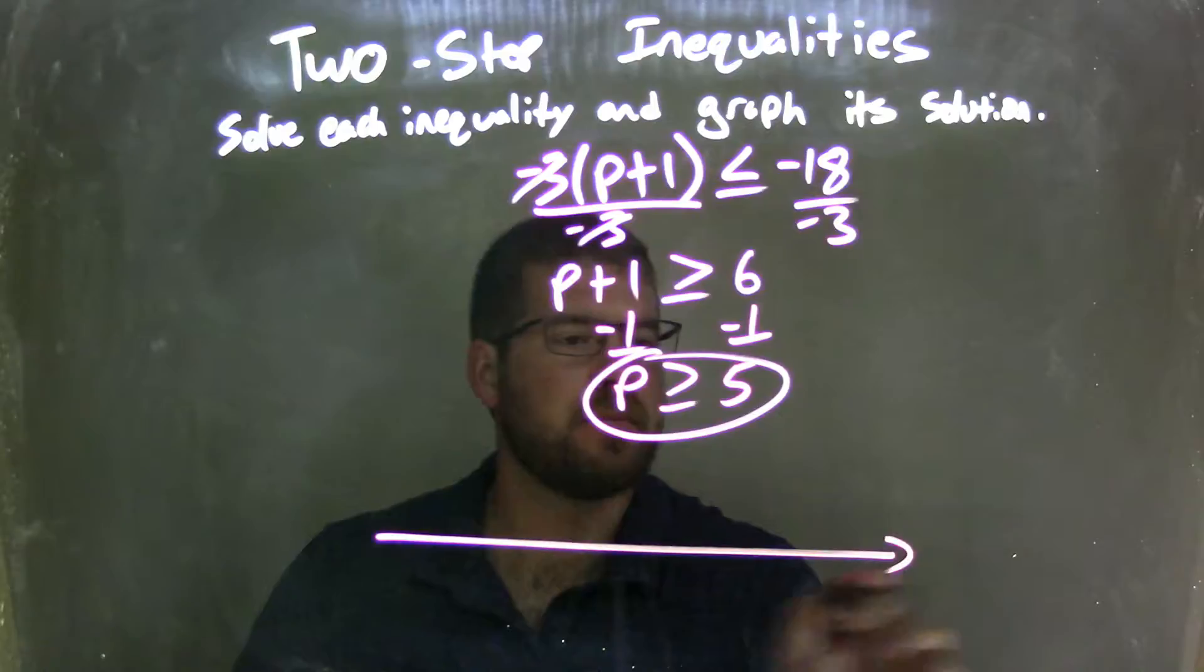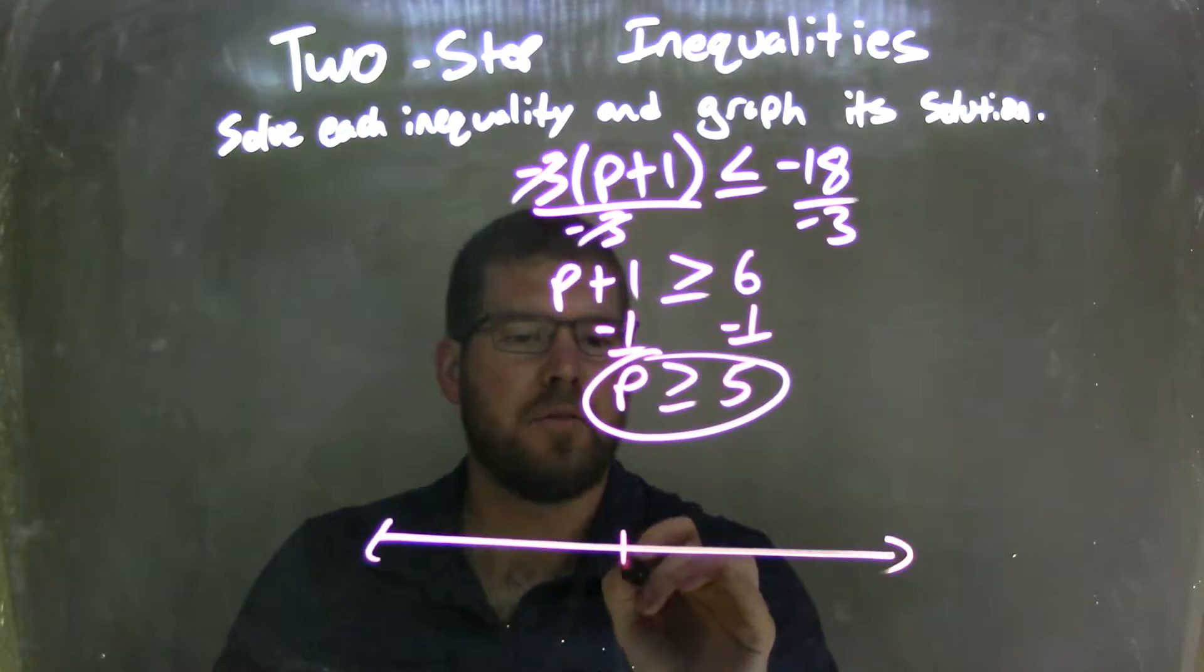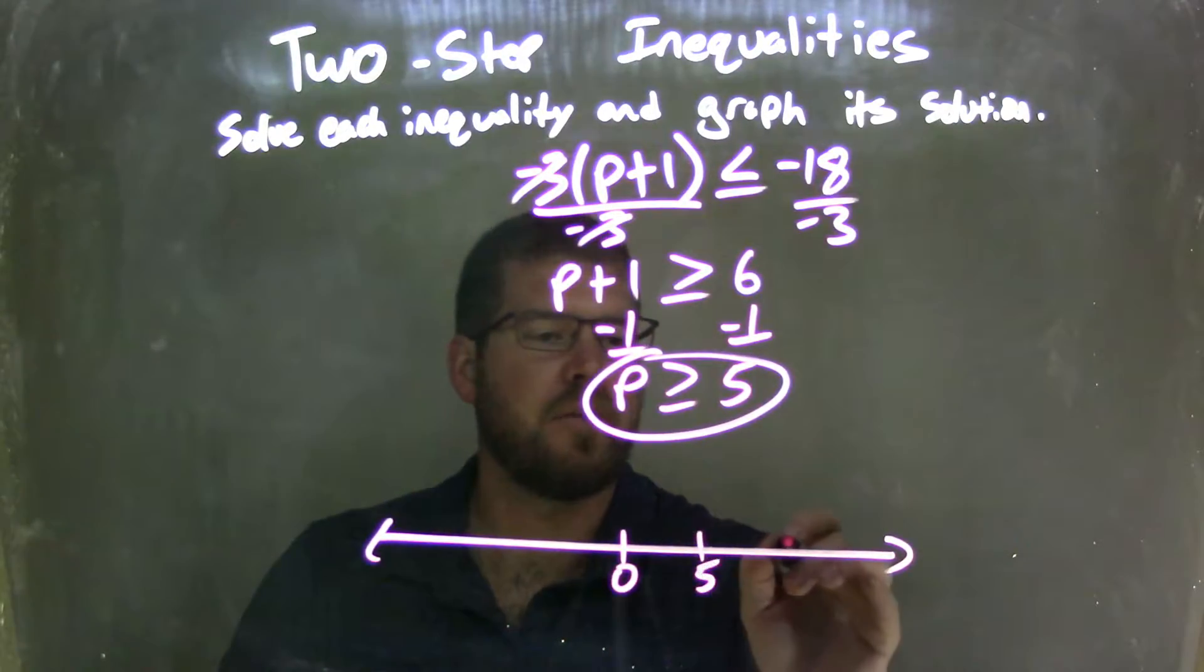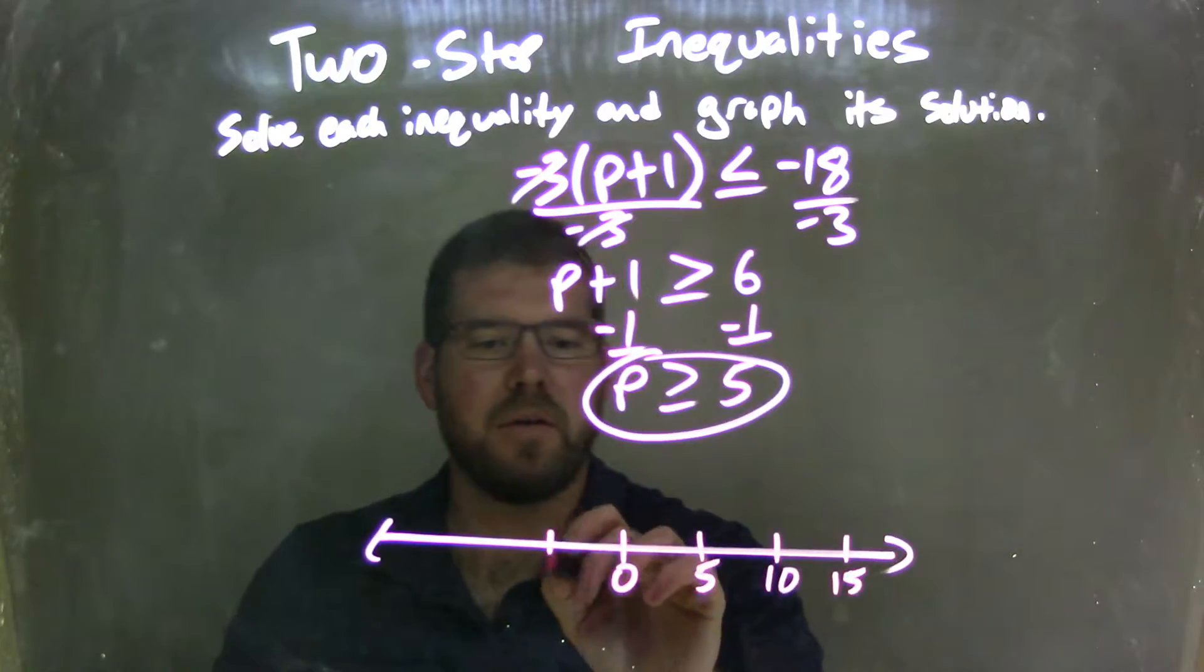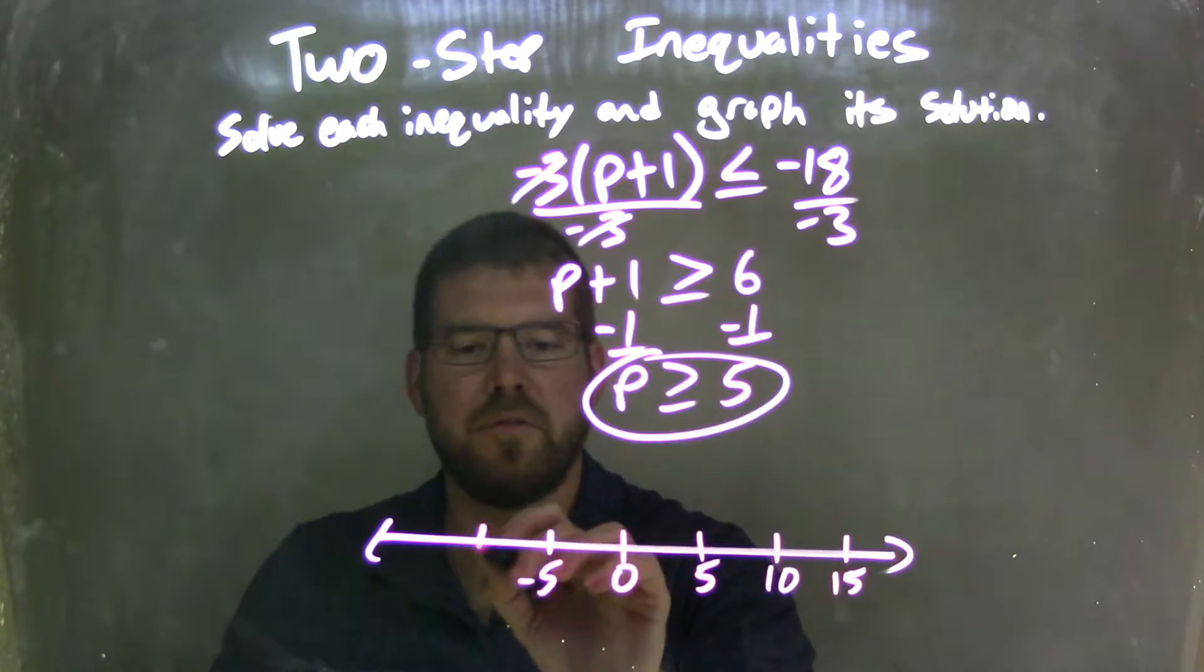So now let's graph it. Now we have 0, 5, 10. We're going by 5s, so there's 15. Just keep it consistent, whatever units you choose.